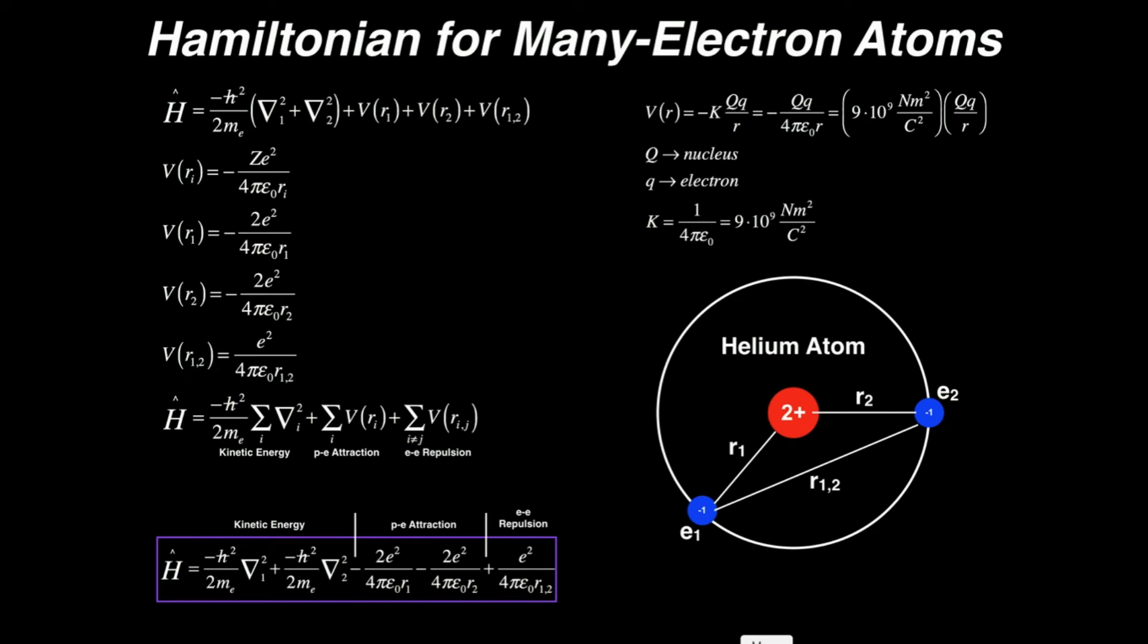Now we're going to look at deriving the Hamiltonian for many electron atoms. All the models we've dealt with up to this point - the harmonic oscillator, the particle in a box, all that stuff, up through the hydrogenic atom - those Hamiltonians through the Schrodinger equation can actually be derived analytically with techniques you might learn in a partial differential equations course. They're complicated sometimes, but they can be done.